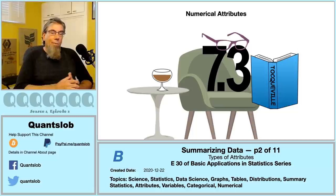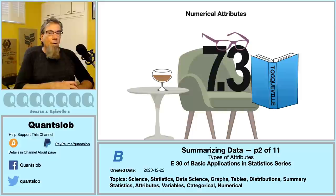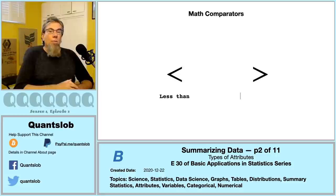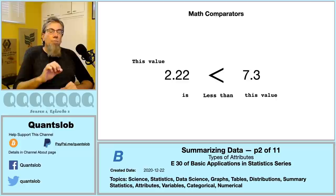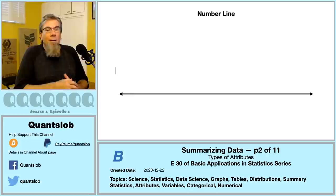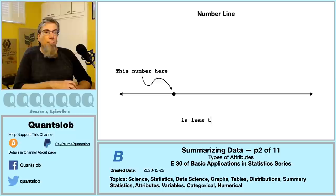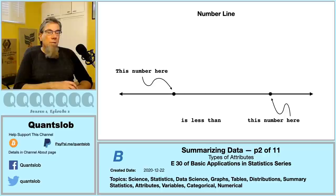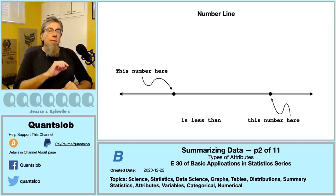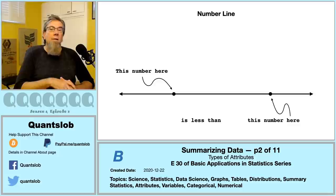The behavior we're talking about involves strict mathematical comparators — less than and greater than. The essence of numerical attributes is that we may compare two examples and speak in terms of one being greater than or more than another. A convenient illustration of this is the number line. On the number line, each number represents a point, and for any two numbers, the one farther to the right is bigger. The real numbers are an ordered set — smaller to the left, greater to the right.